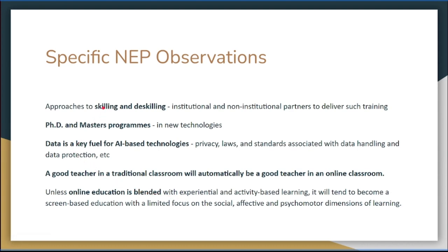There is a need for skilling and de-skilling. Even in a BA program or a teacher education program, we impart some skills — but those skills have to be learned, de-learned, and re-learned. Skilling and de-skilling has to be done, and new skills have to be learned. PhD and master's degree programs have to be done in new technology, and technology has to be integrated.